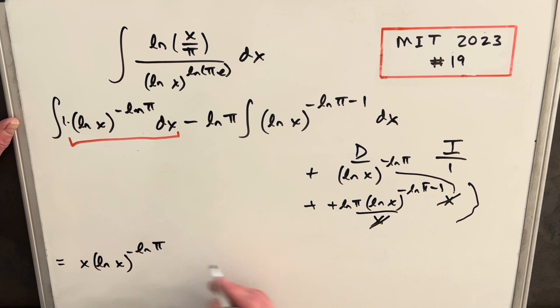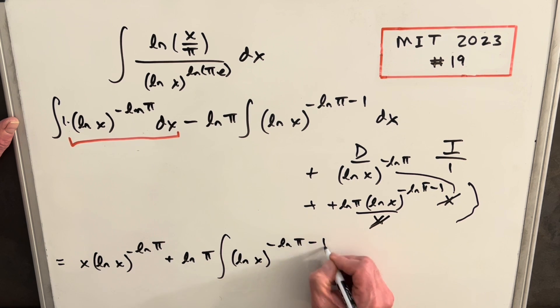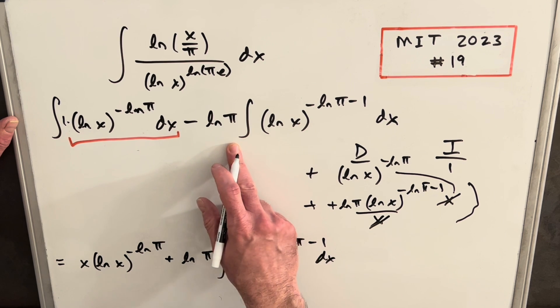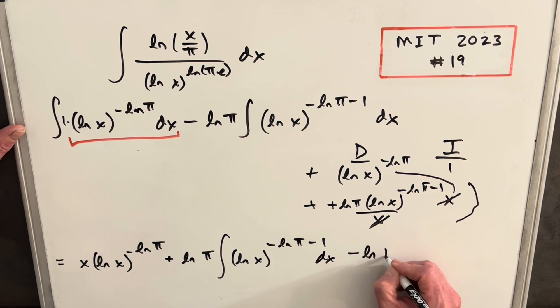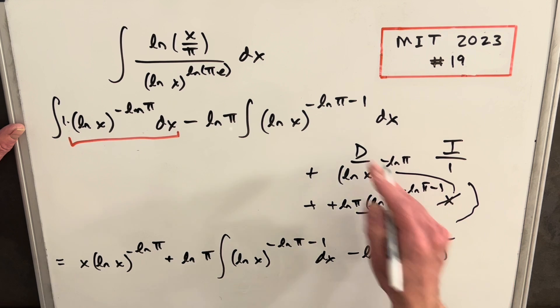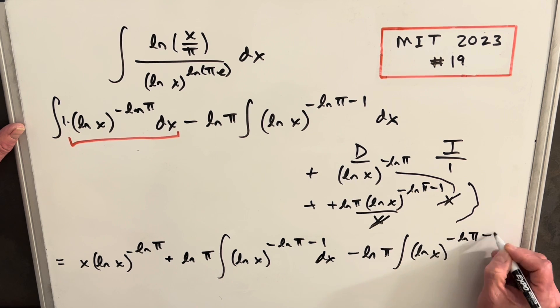Writing out this integral, we're going to have plus ln π in front. That's a constant, so we can have that in front of the integral. And then we're going to have natural log of x minus natural log π minus 1 dx. And then keep in mind, we still have this, and this is the exact same thing. So let's just write it in there. We're going to have minus ln π ln x minus ln π minus 1.